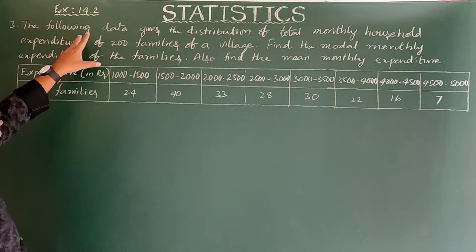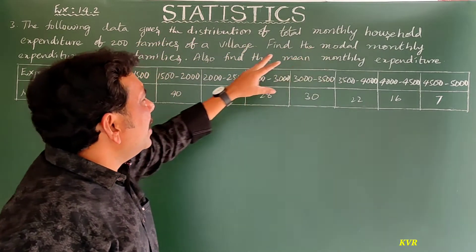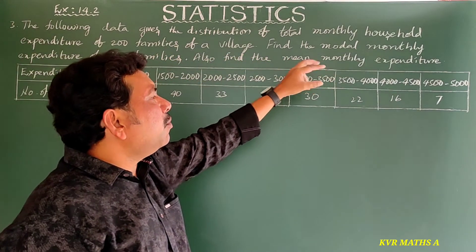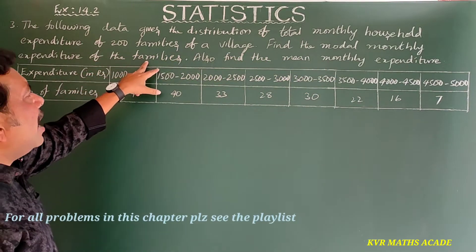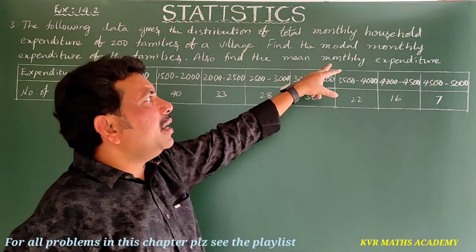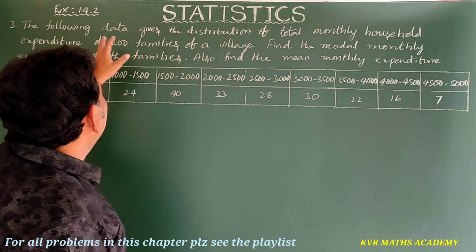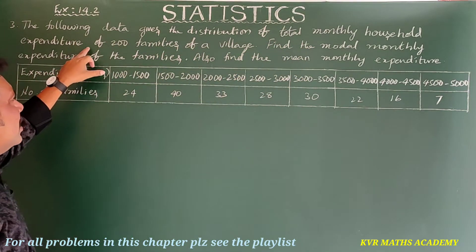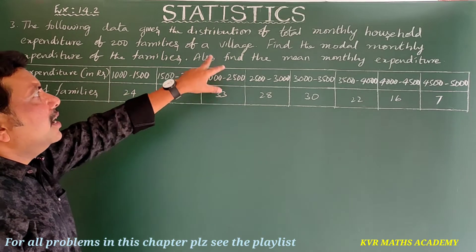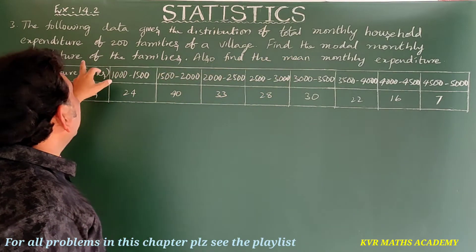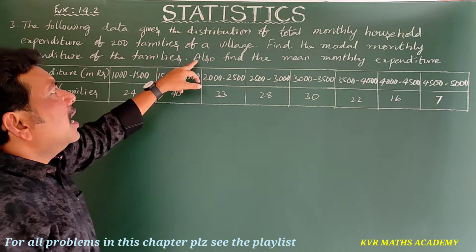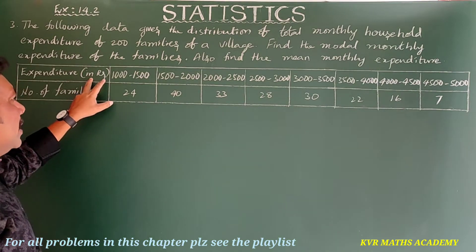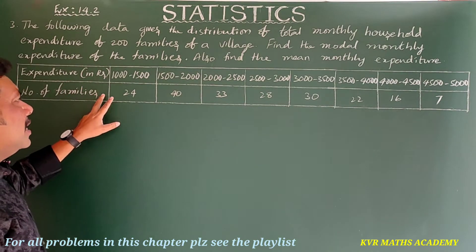This is the third question: 'The following data gives the distribution of total monthly household expenditure of 200 families of a village. Find the modal monthly expenditure of the families. Also find the mean monthly expenditure.' Here, expenditure in rupees and number of families are given.